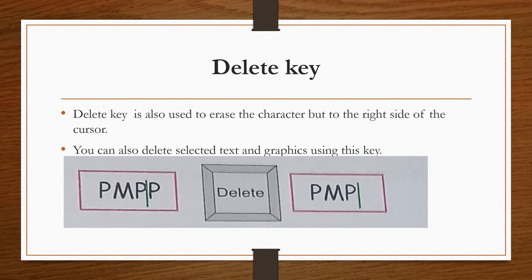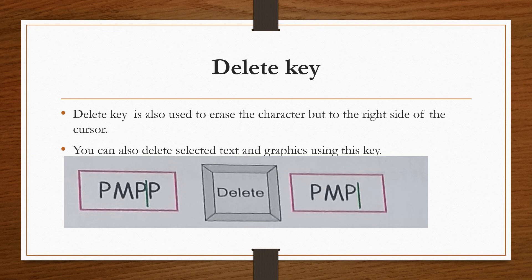Next is delete key. So delete key is also used to erase the character, but what is the difference between the backspace key and the delete key? The delete key is used to erase to the right side of the cursor, whereas backspace was used to erase to the left side of the cursor. Similar example we can take here, P M P P. So here you can see the cursor is after the third letter P, so it has removed to the right hand side, not the left hand side.